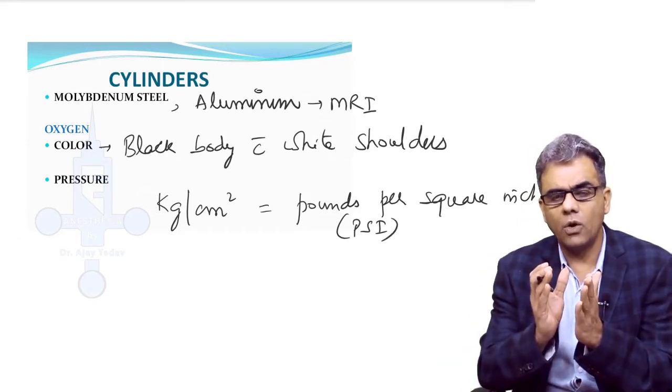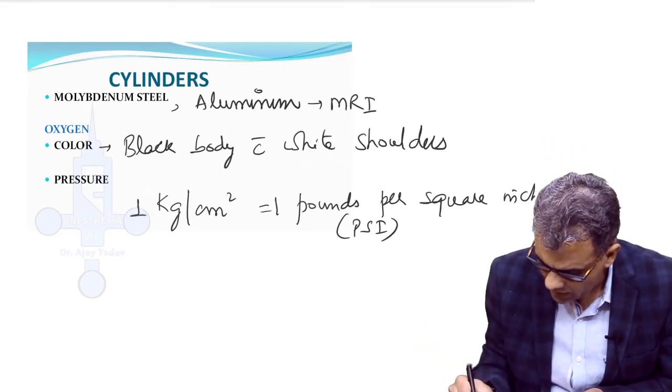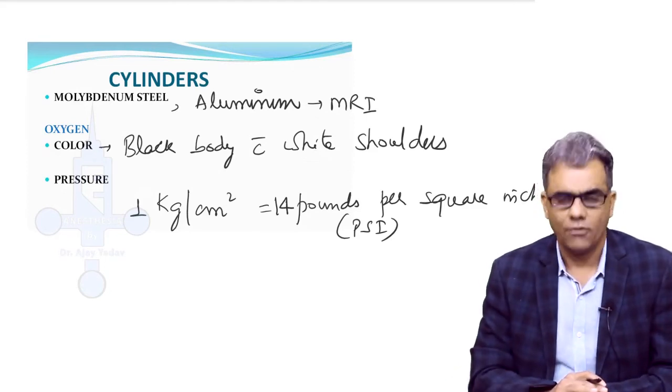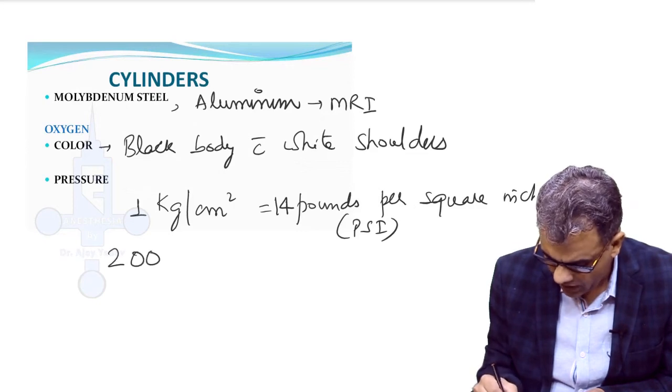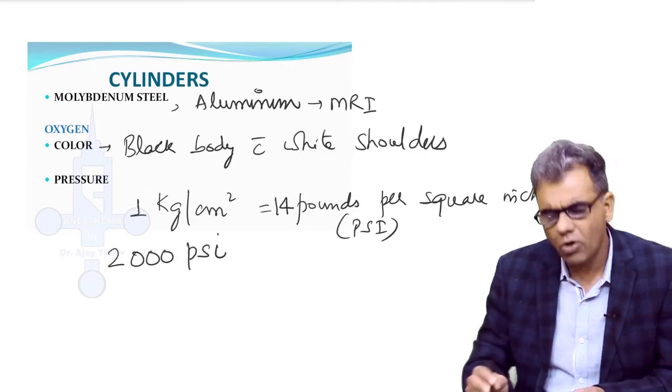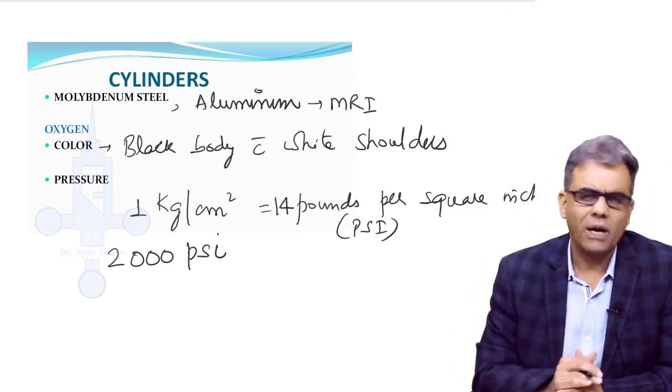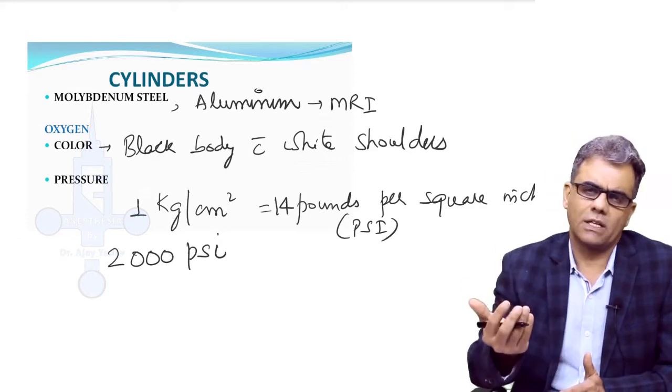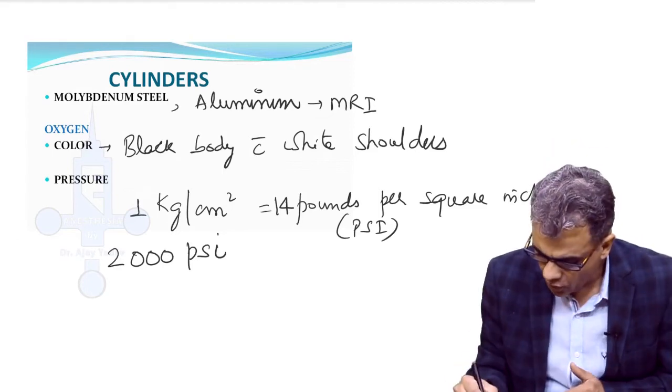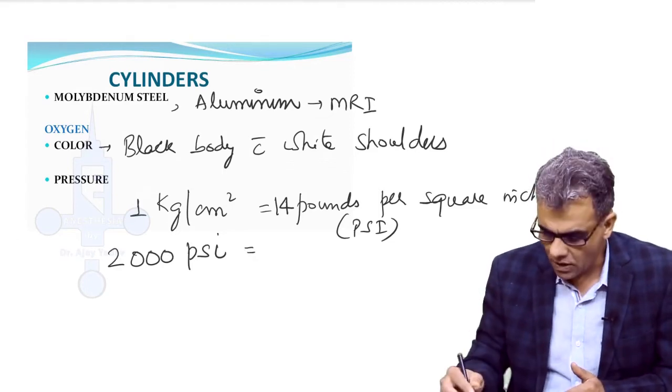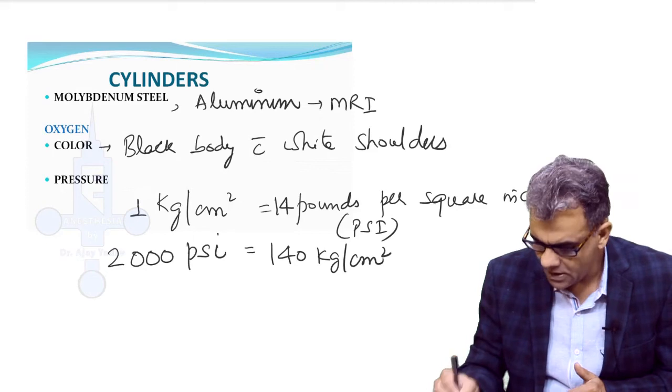You can remember in one unit and if required you can always convert it. One kilogram per centimeter square is equivalent to around 14 psi. In a full oxygen cylinder, the pressure is 2000 psi. More commonly we are using psi. By chance, in a question if they ask about kilogram per centimeter square, then you can always convert it. In a full oxygen cylinder the pressure is 2000 psi, which if you convert to kilogram per centimeter square will come to be somewhere around 140 kilogram per centimeter square.